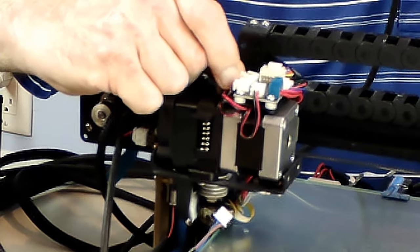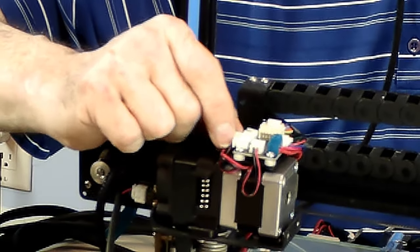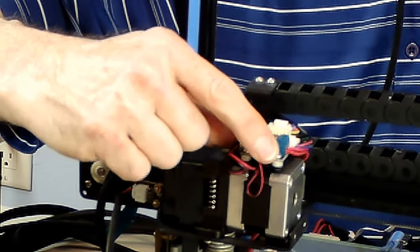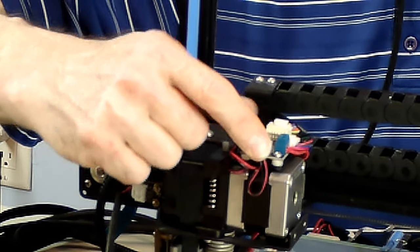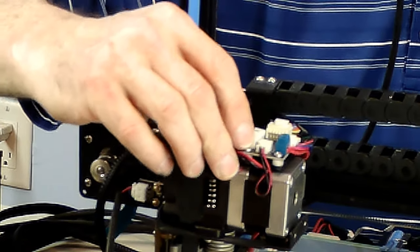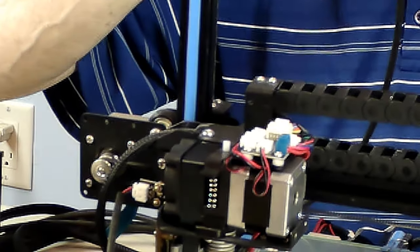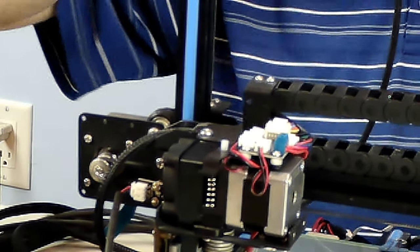So we're going to take the LED plug out of that socket and we're going to move it forward one. And you're going to lose control over the LED. It's going to go on and off with the power to the machine. But it's the only way to get control of your cooling fan which is the optimum configuration.